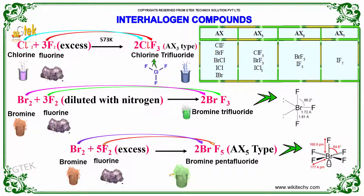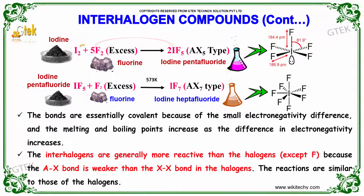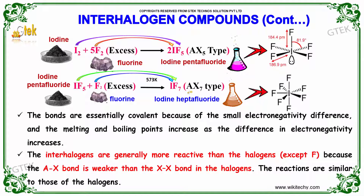Here is the structure of bromine pentafluoride and bromine trifluoride. Iodine combining with excess fluorine may form iodine pentafluoride, which is of AX5 type. That iodine pentafluoride then joins with fluorine to form iodine heptafluoride, which is of AX7 type.